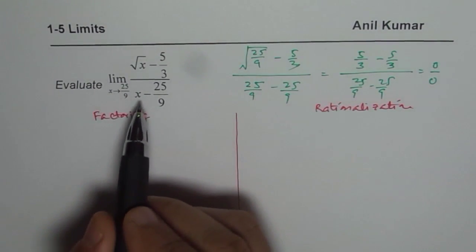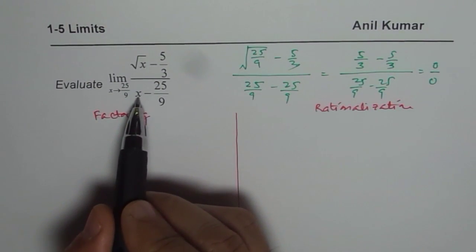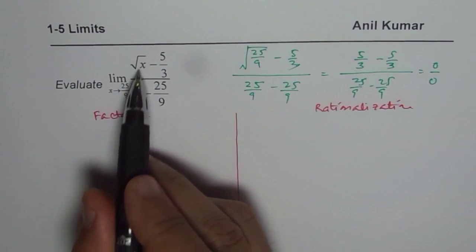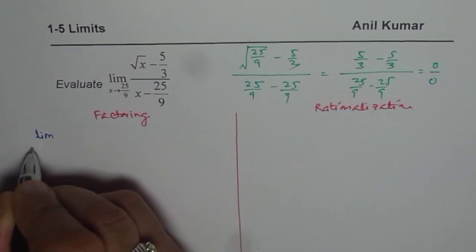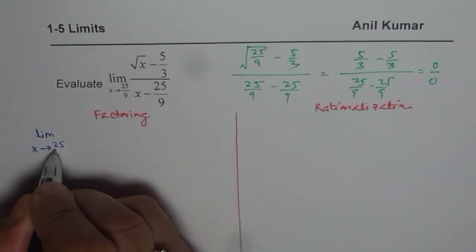So factoring. You could treat x as square of square root x. Do you see that? So let me rewrite this question so that it becomes very clear how we can factor this and get the answer.